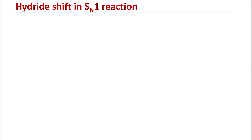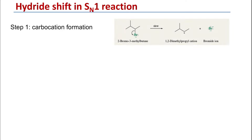The first type of reaction that shows these rearrangements is the SN1 reaction, where we can see both hydride and methyl shift. The first step in the SN1 reaction is carbocation formation. Here we have 3-bromo-3-methylbutane, which is a secondary alkyl halide. The first step in the reaction is the generation of the carbocation, where the bromide will leave and a secondary carbocation is generated.